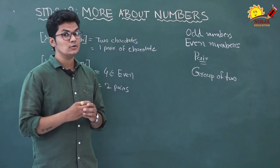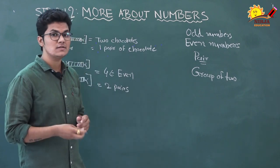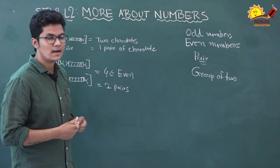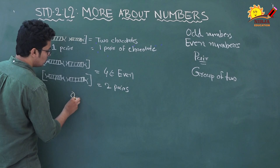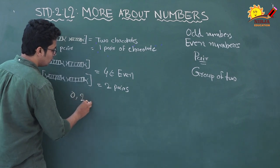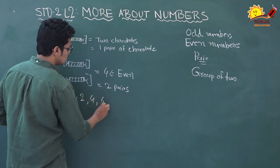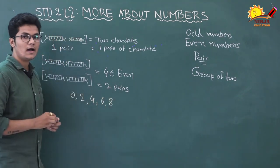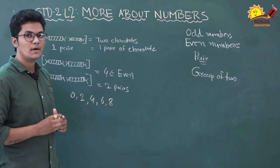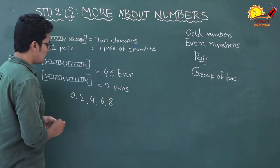So we can see that whichever number has zero, two, four, six, or eight in the ones place, that number is an even number.